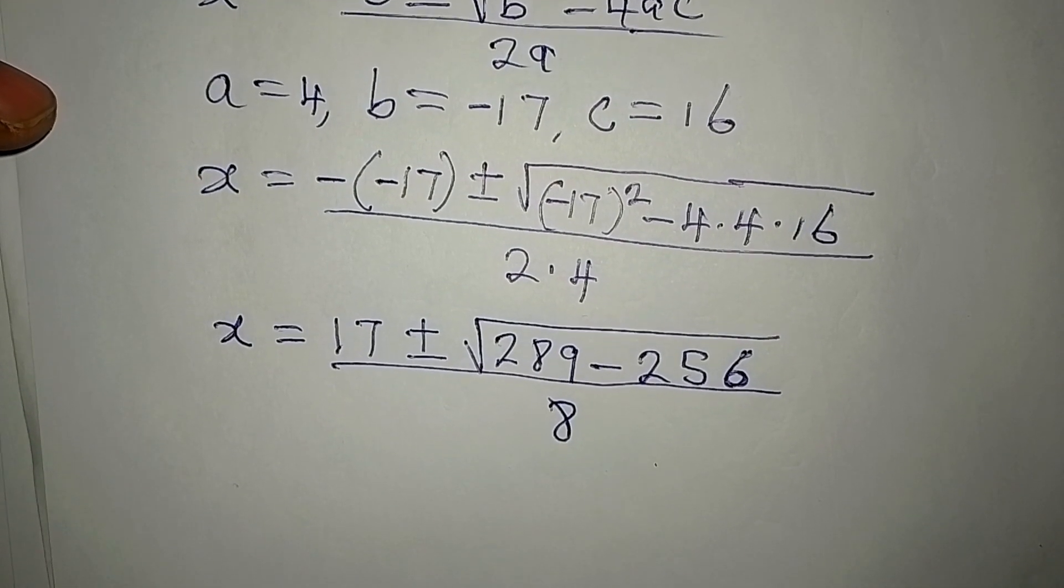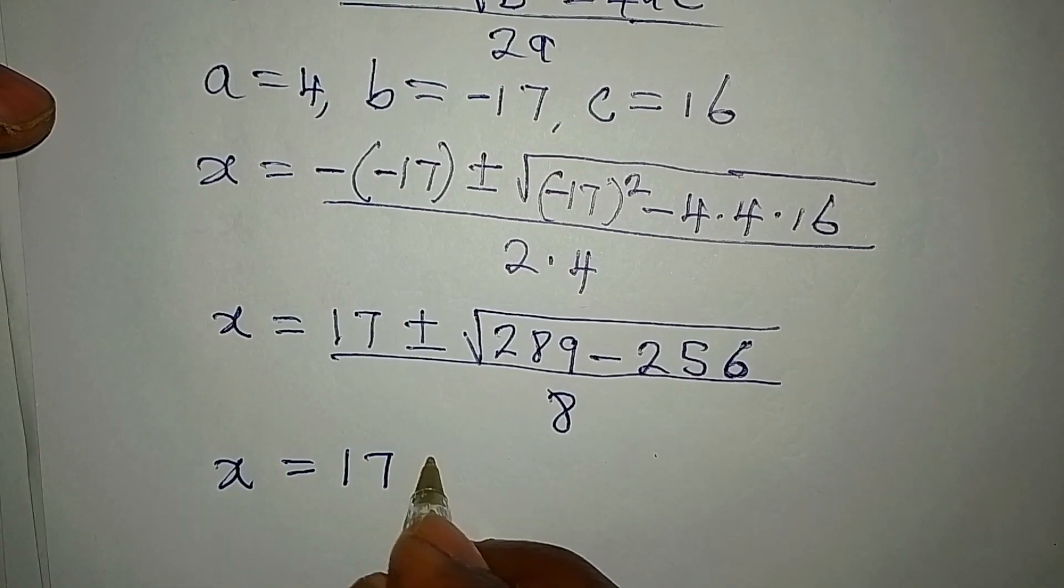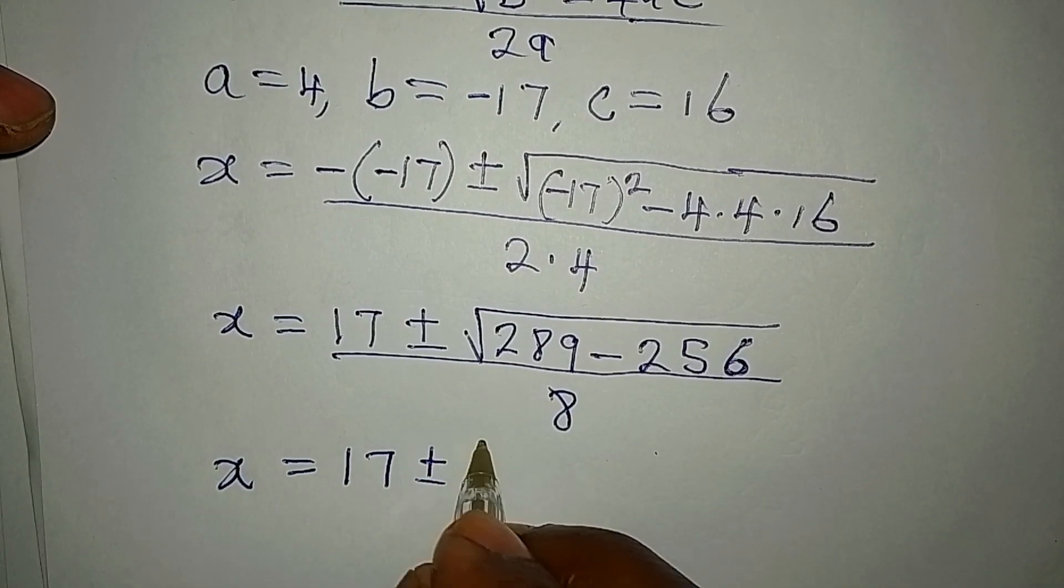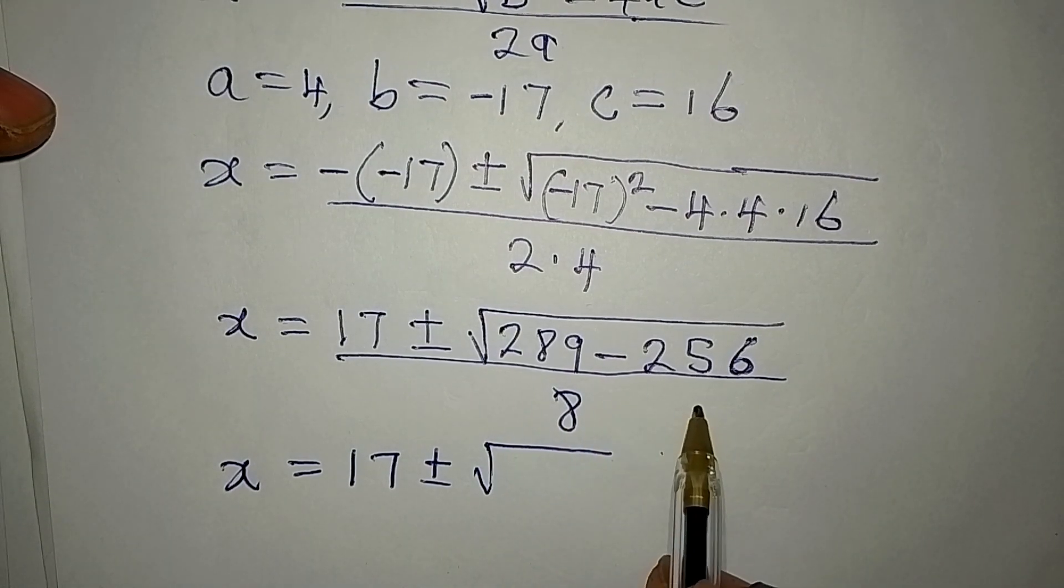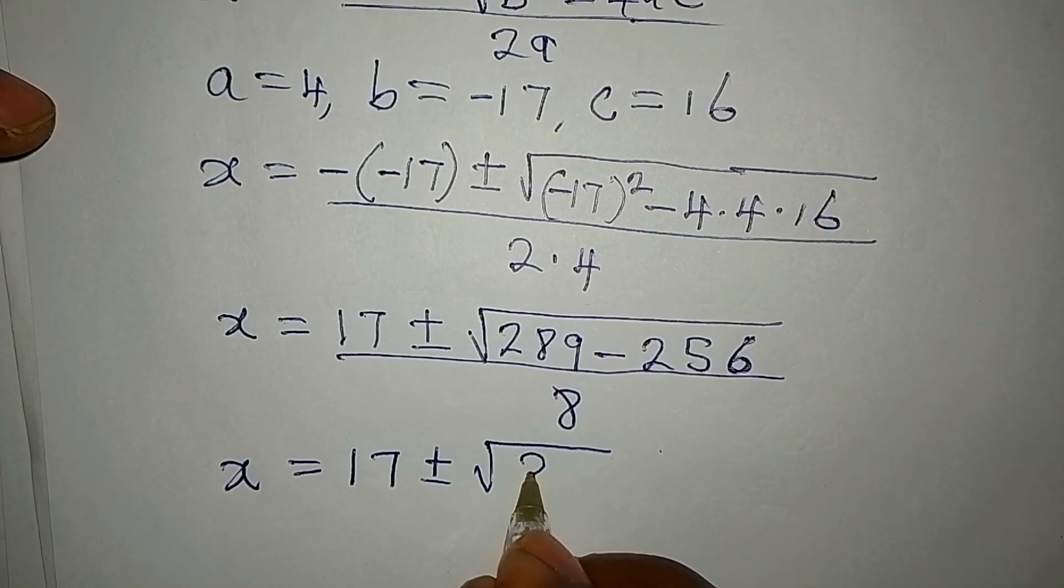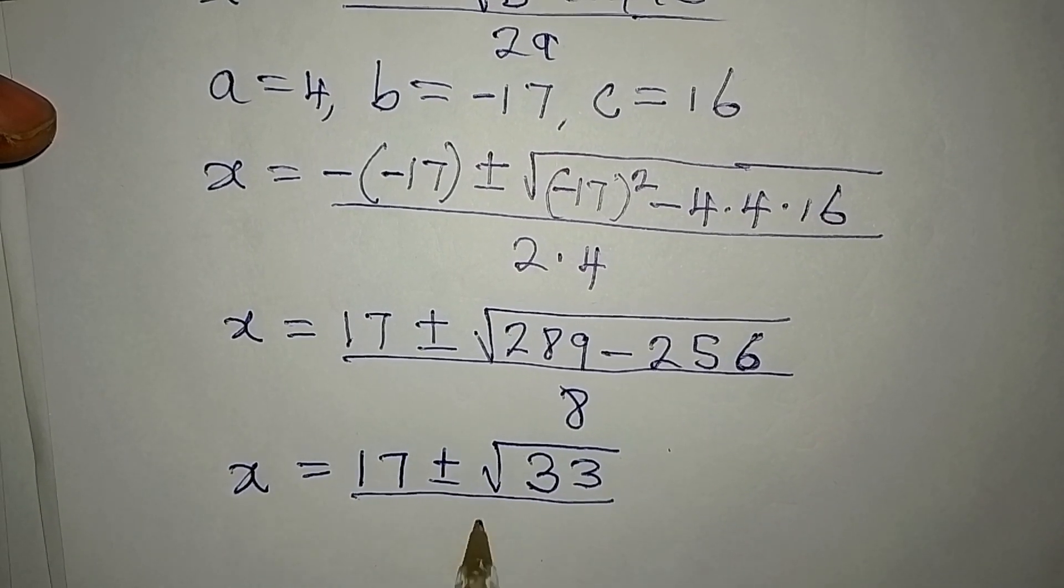So, from here, our x is equal to 17 plus or minus. We have 289 minus 256. That will give us 33, and this is over 8.